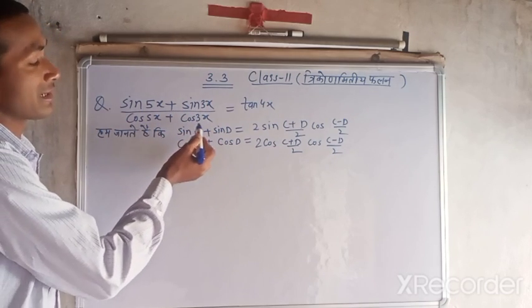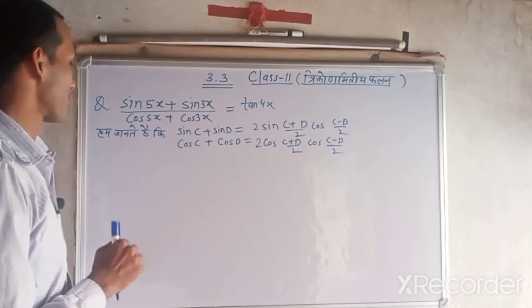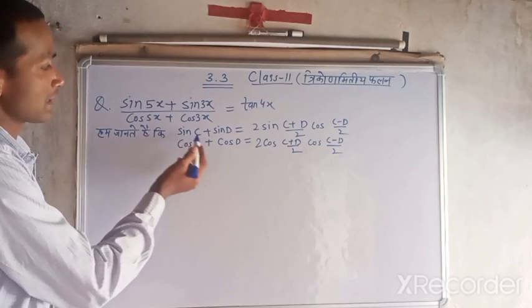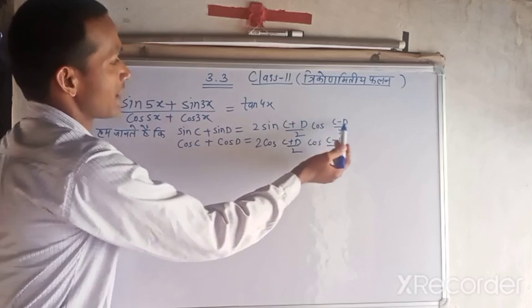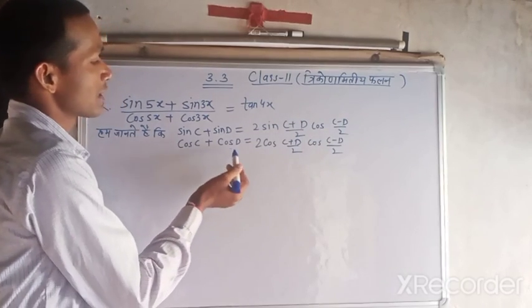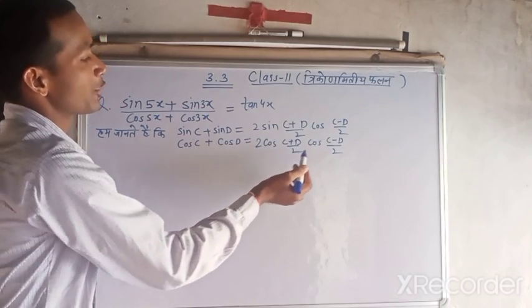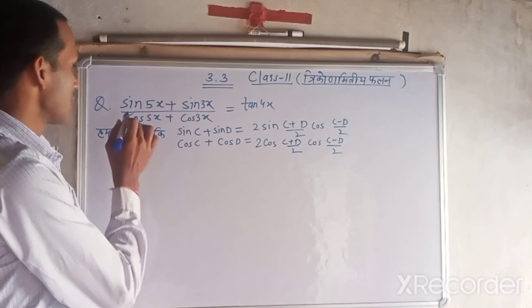We have a question written here: (sin 5x + sin 3x)/(cos 5x + cos 3x) = tan 4x. Now we know that sin C + sin D equals 2 sin((C+D)/2) cos((C-D)/2), and cos C + cos D equals 2 cos((C+D)/2) cos((C-D)/2).